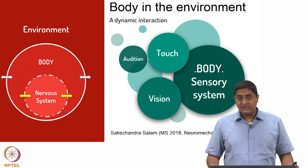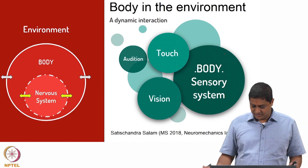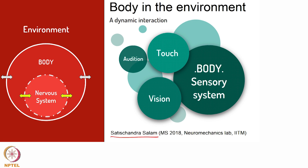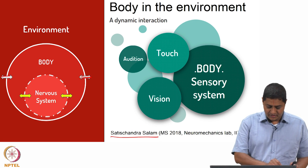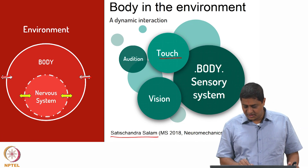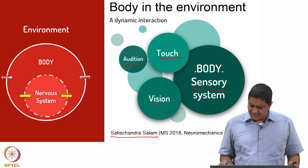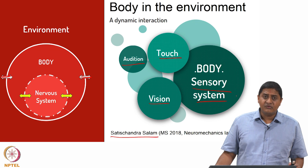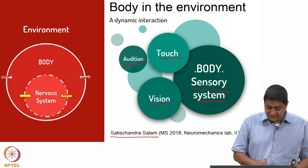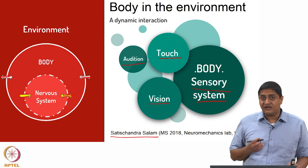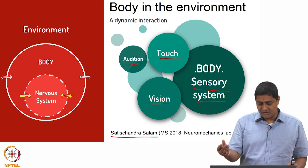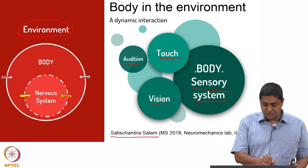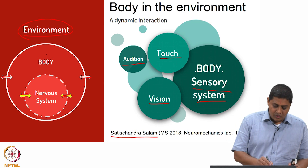Let us remember that the body is in dynamic interaction with the environment. This is a nice schematic prepared by my former student Satish, where he shows that the body is interacting with the environment through multiple modalities — touch, audition, vision, and essentially the sensory systems. The nervous system forms one component of the body and interacts with the rest of the body. For the nervous system to make its decisions concerning movements, it should know about the environment and also about the body.